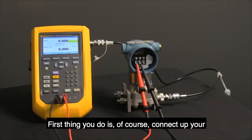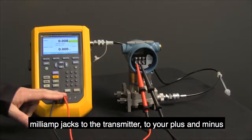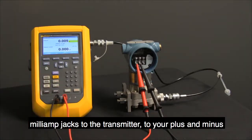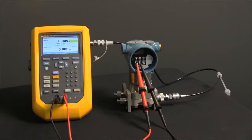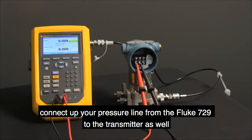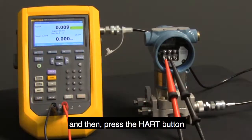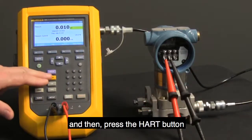The first thing you do is connect up your milliamp jacks to the transmitter, to your plus and minus. Connect up your pressure line from the Fluke 729 to the transmitter as well, and then press the HART button.